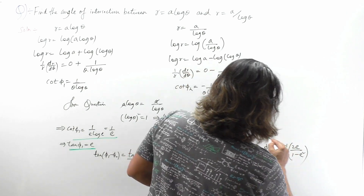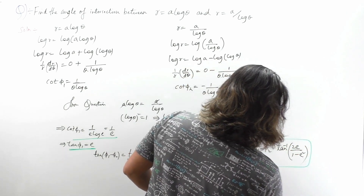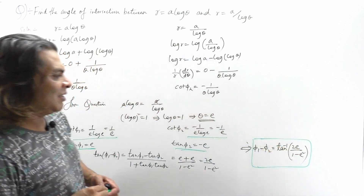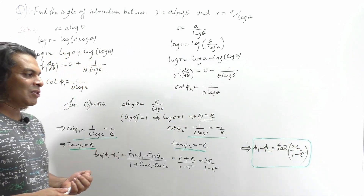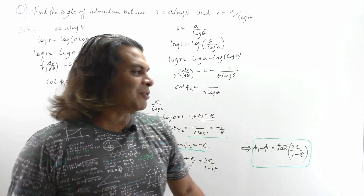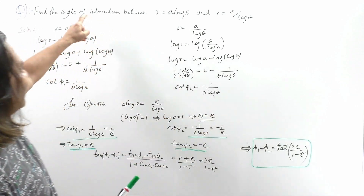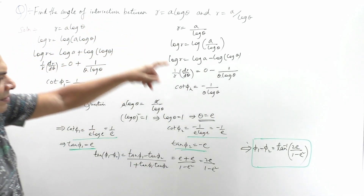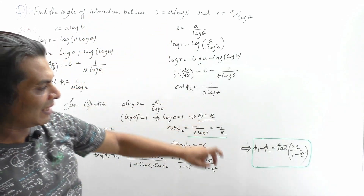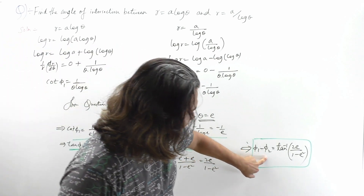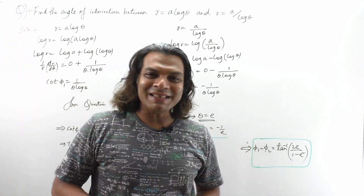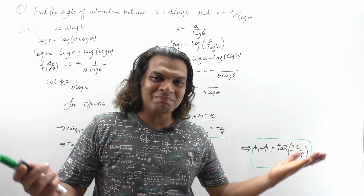This is a very, very important result. Therefore the angle of intersection φ₁ − φ₂ = tan⁻¹(2e/(1 − e²)). There is no need to solve further using a calculator — this is the exact answer. The angle of intersection between r = a·logθ and r = a/logθ is tan⁻¹(2e/(1 − e²)).